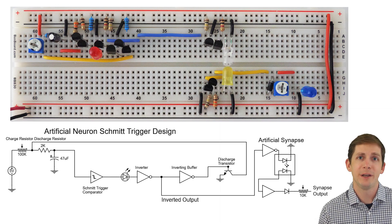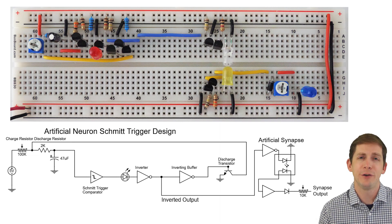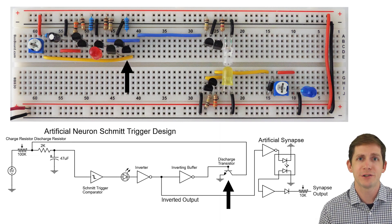Next, there needed to be an inverter and an inverting buffer to allow the output to be sent to the artificial synapse and discharge transistor.